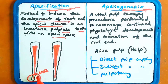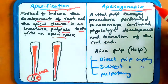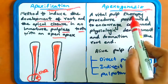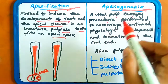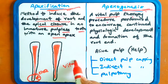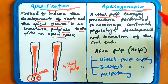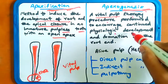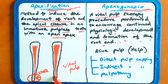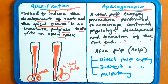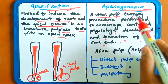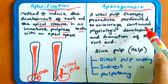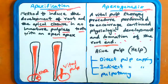In apexogenesis, it is a vital pulp therapy procedure performed to encourage the continued physiological development and formation of the root. Here the root is generated — the apex is generated. This is done in an alive pulp; with the help of an alive pulp, root formation takes place.